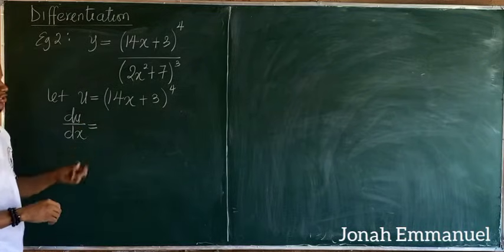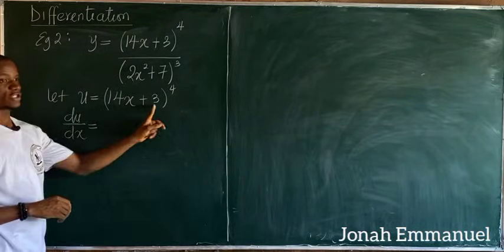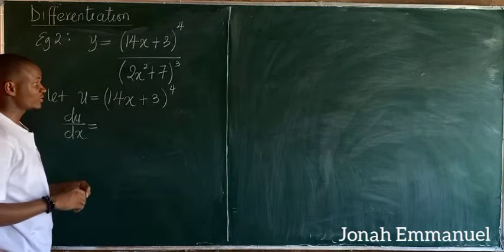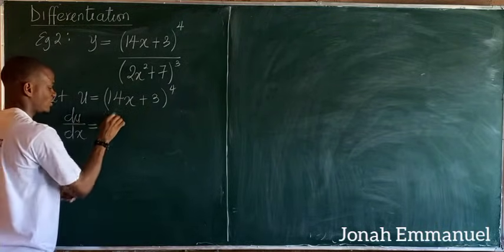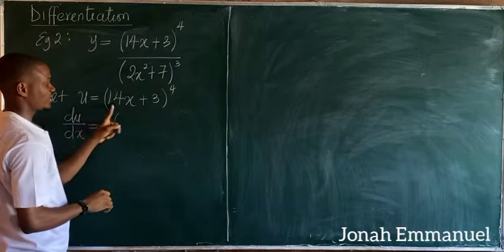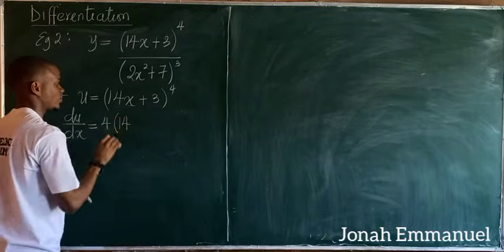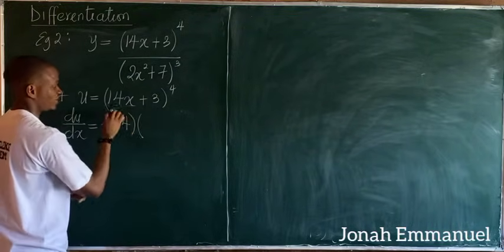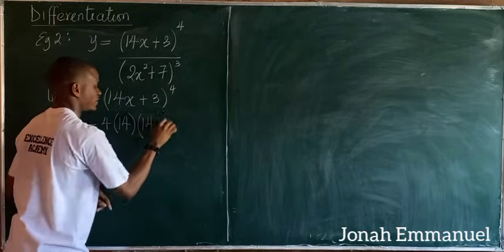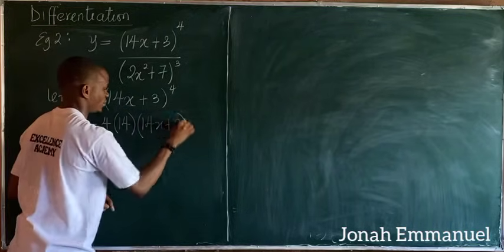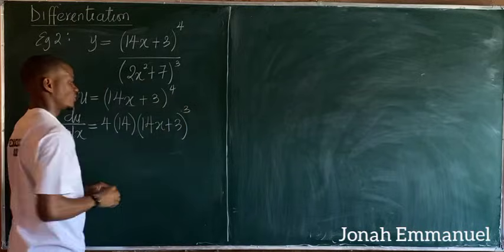Using our chain rule shortcut: write out the power, that's 4. Next, differentiate the inner expression (14x + 3), which gives 14. Repeat the original bracket (14x + 3), then subtract 1 from the power to give 3.